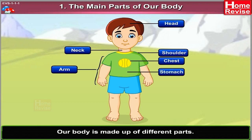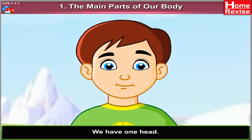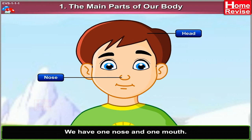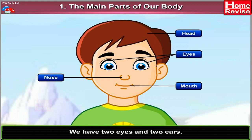Stomach and Legs. We have one head. The head is covered with plenty of hair. We have one nose and one mouth. We have two eyes and two ears.